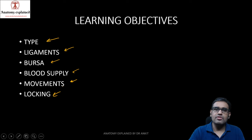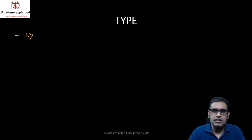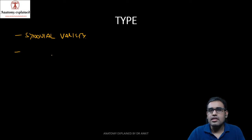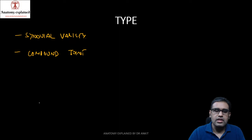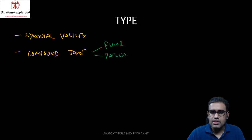Let's start with the type of the joint. The knee joint moves, so it comes under the synovial variety of joint. In the synovial variety, there are more than two bones involved, so we call it a compound joint. The bones involved are the femur, then we have a sesamoid bone — the largest sesamoid bone — the patella, and the tibia.